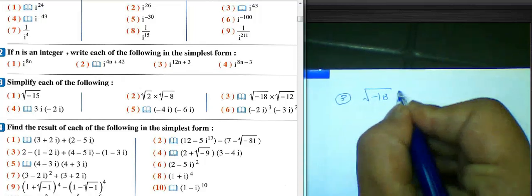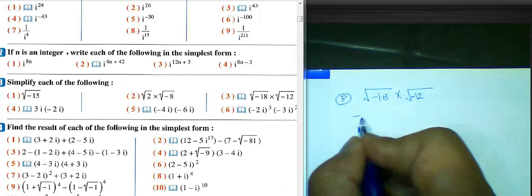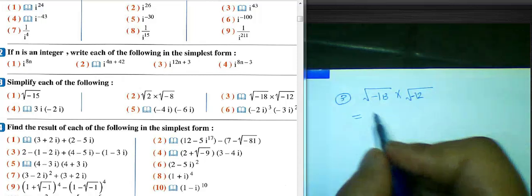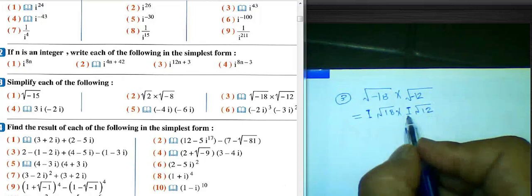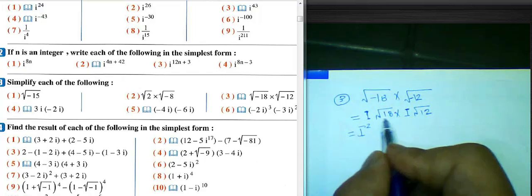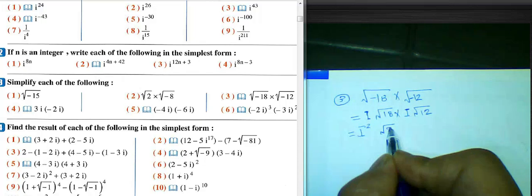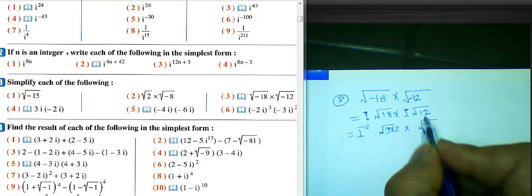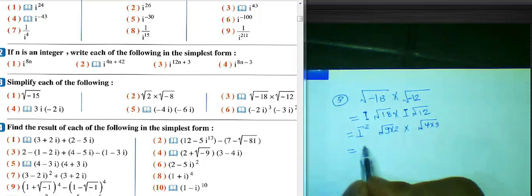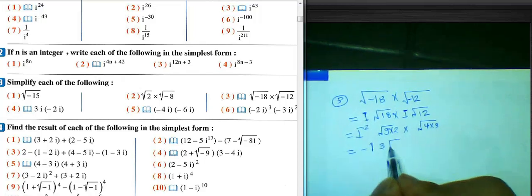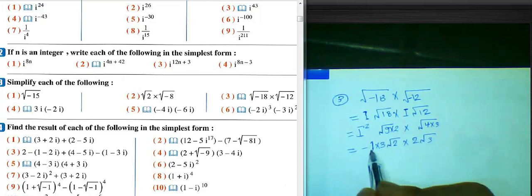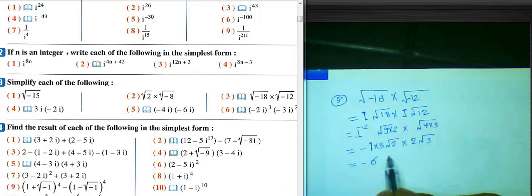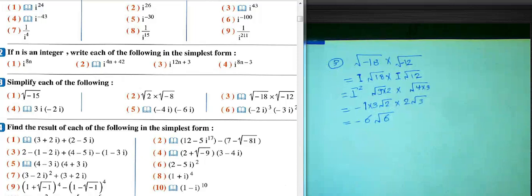Question 3: √(-18) times √(-12). We write i·√18 times i·√12. i times i equals i^2. √18 equals √(9×2) equals 3√2, and √12 equals √(4×3) equals 2√3. i^2 equals negative 1. So the result is negative 1 times 3√2 times 2√3 equals negative 6√6.